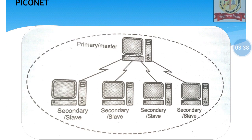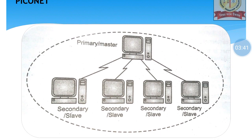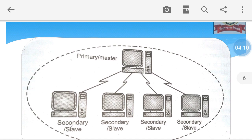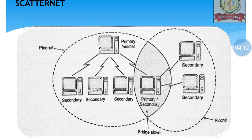Let us see what Piconet and Scatternet are. For example, if there are five devices connected to each other via Bluetooth, one of them will be working as a primary or master device, and the other devices would be considered slave or secondary devices. The primary device will guide all other devices on how to work or communicate. This is Piconet architecture.